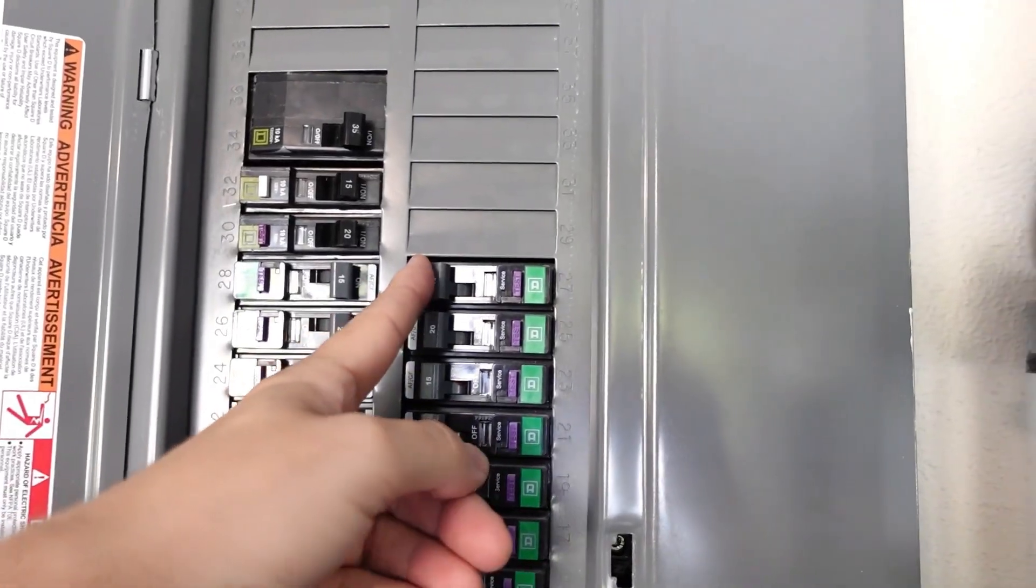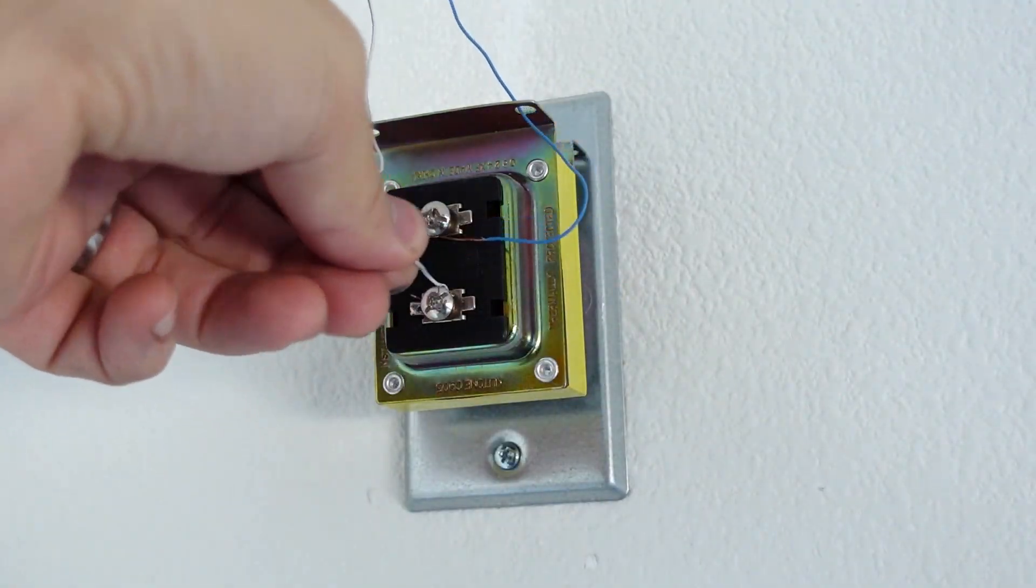Step one, turn off your circuit breaker. Next take a screwdriver and remove the wires, pull them out of the way.